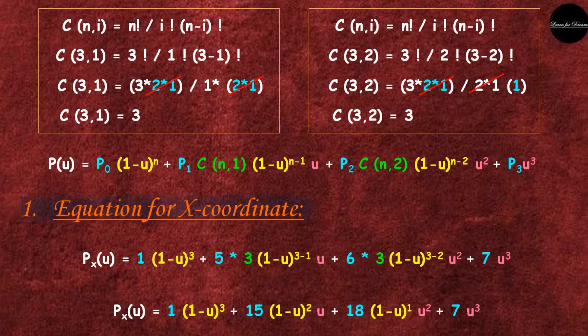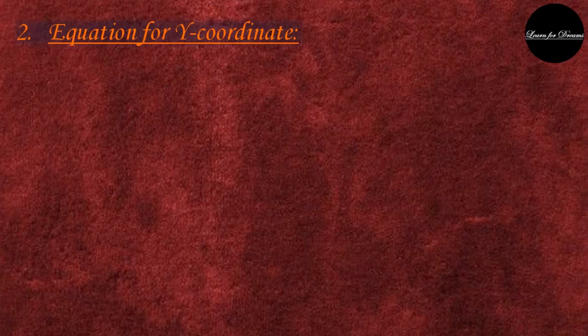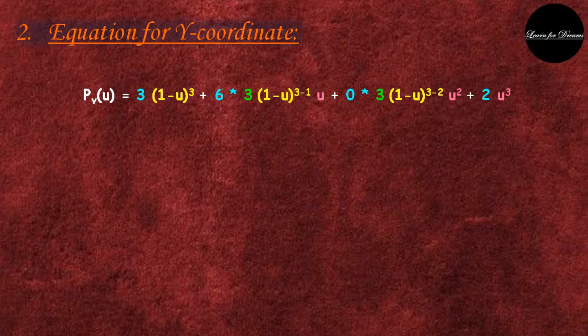Here the only variable is u, which is a parameter. Similarly, we will find an equation for y coordinates. We put P0, P1, P2, P3's y coordinates and the C(n,i) values.